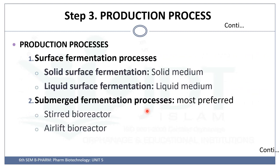The production process of citric acid can be done by two methods: surface fermentation or submerged fermentation. Surface fermentation can be further divided into solid surface fermentation and liquid surface fermentation based on the physical state of the medium used. For submerged fermentation, we use a bioreactor such as a stirred tank or airlift reactor.